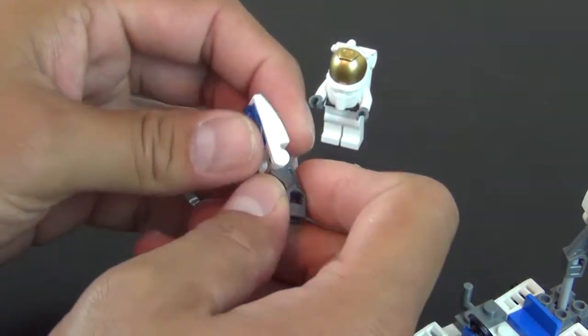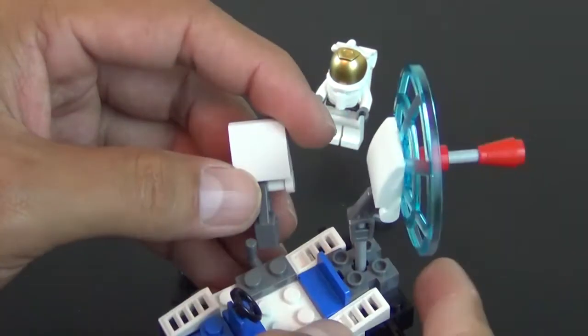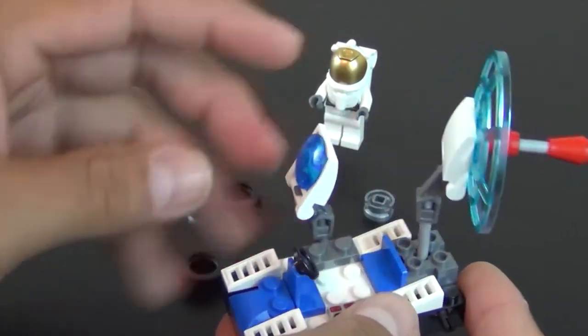So we have the big radar dish and then we have the smaller one that attaches right there on the side.